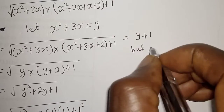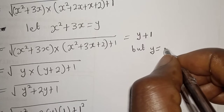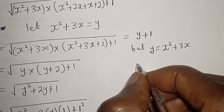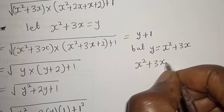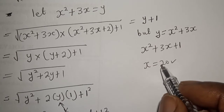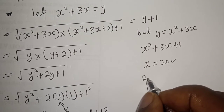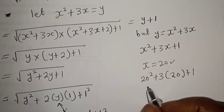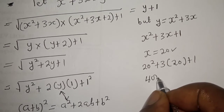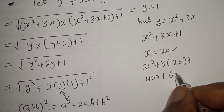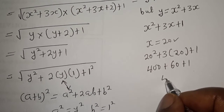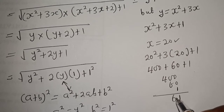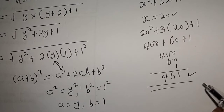Now Y is equal to S squared plus 3S, so the answer is S squared plus 3S plus 1. We know S equals 20, so substituting: 20 squared plus 3 times 20 plus 1 equals 400 plus 60 plus 1 equals 461. This is the final answer.